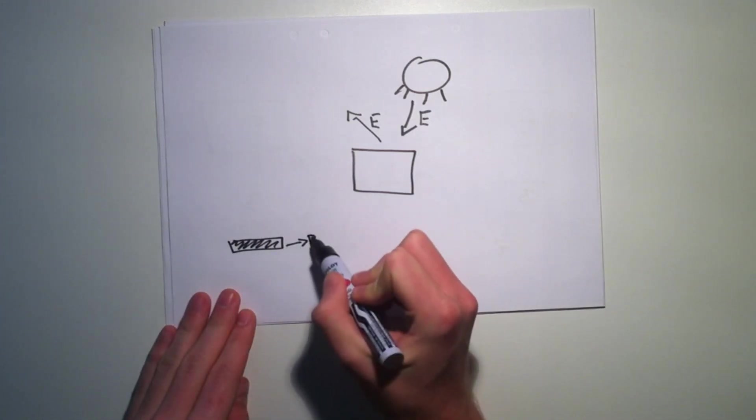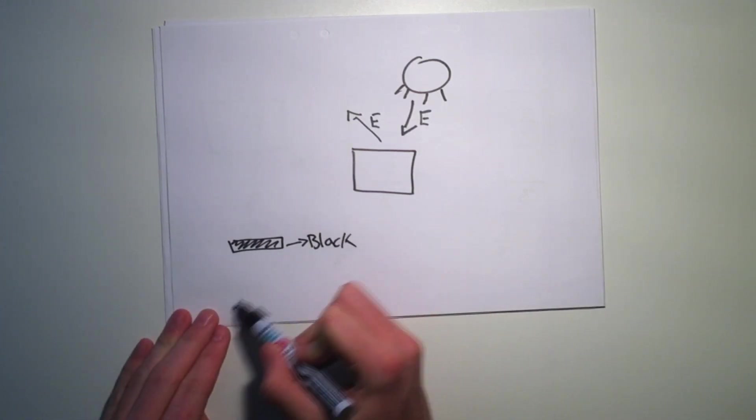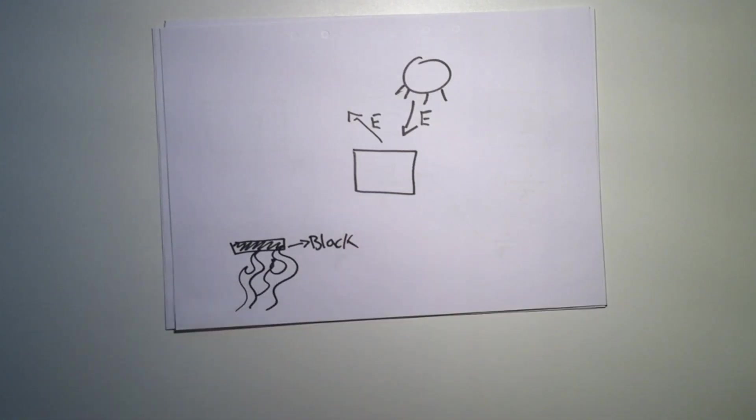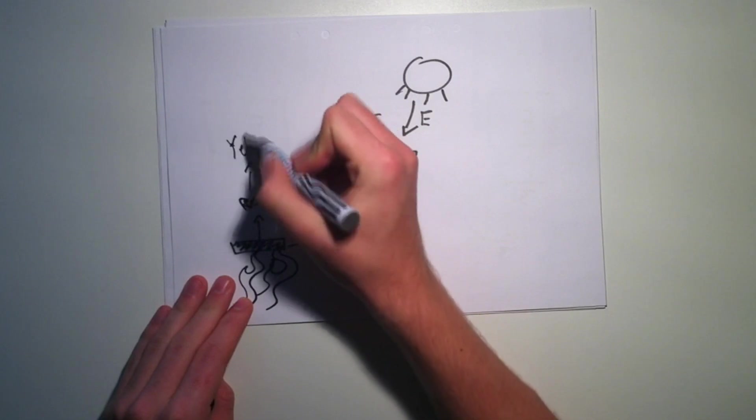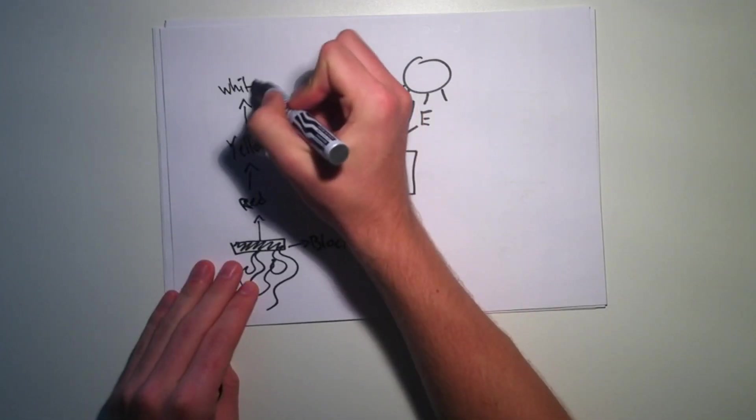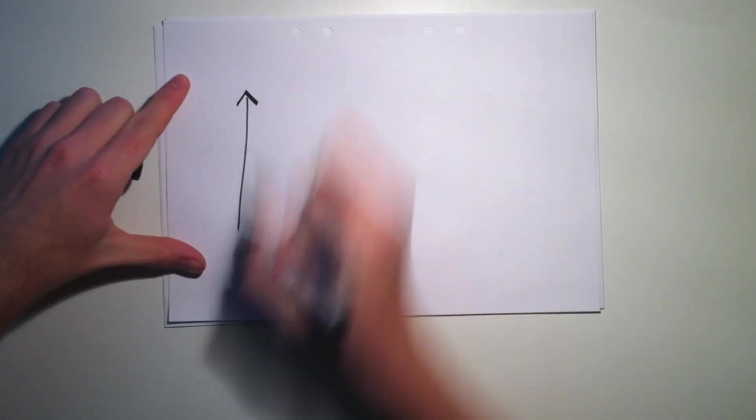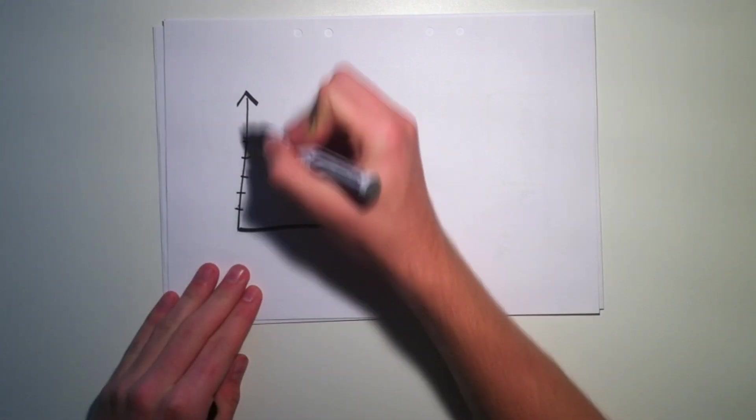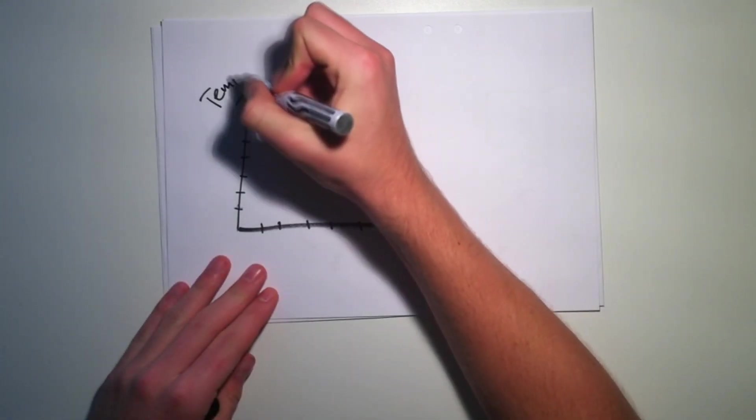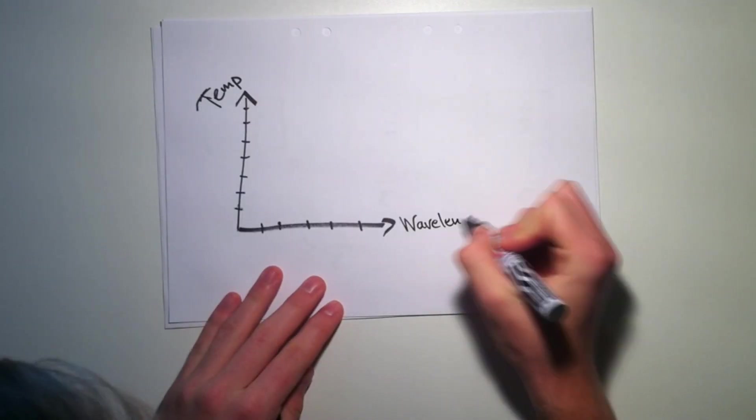So let's pretend we have a piece of black iron. If we warm it up or add energy, the iron piece will eventually start glowing with a red color. If we add more energy, the piece will glow yellow, then white, and finally blue. We can create a diagram where the y-axis is the temperature of the iron piece, and the x-axis is the different wavelength of the light emitted.